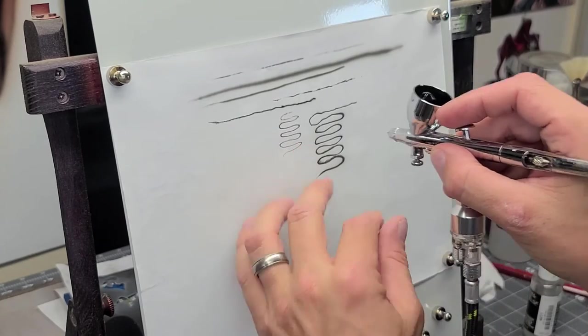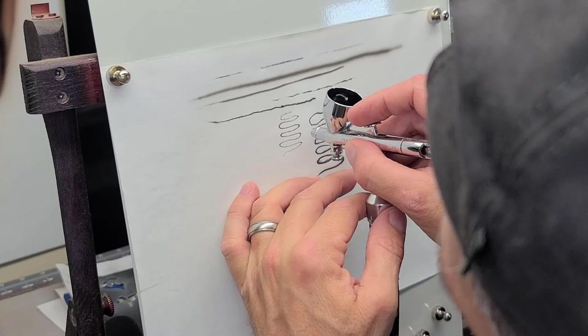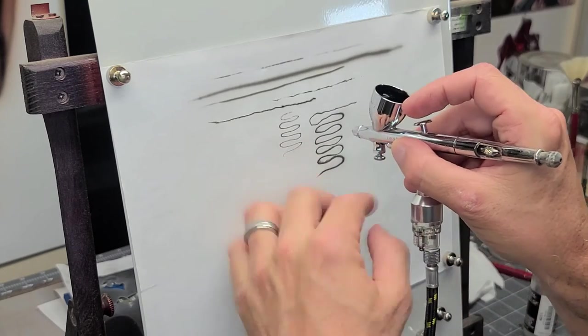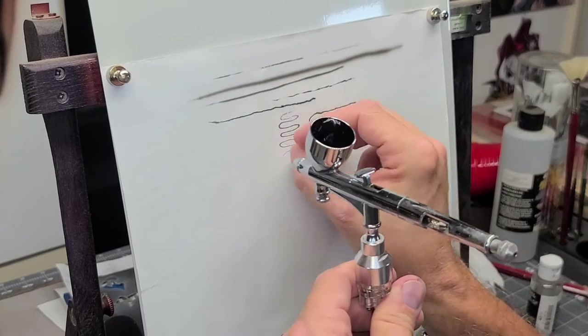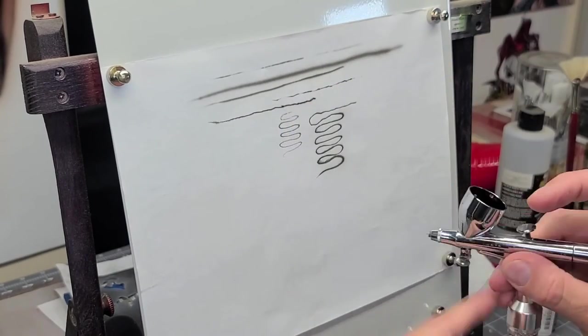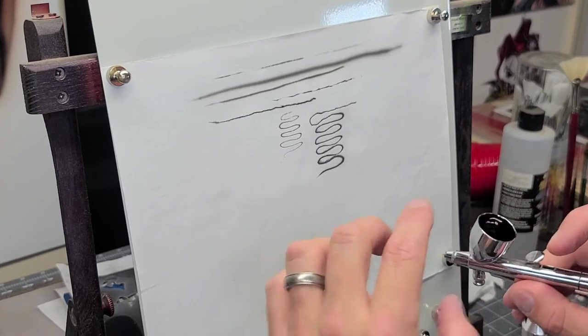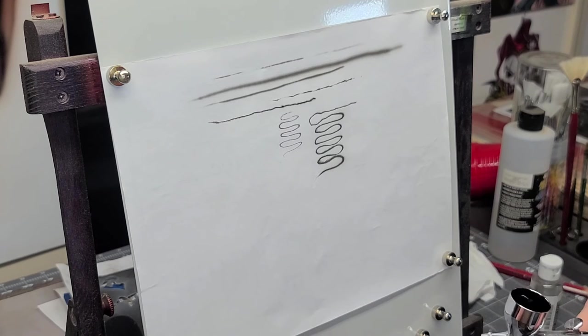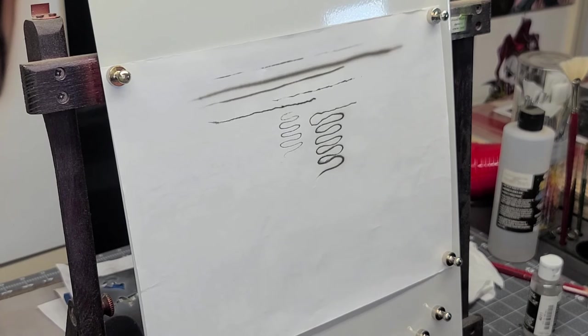So the lower the PSI that you can get that paint to come out. Now keep in mind, you're going to have to thin that paint out pretty good if you're going to be spraying it less than 10 or 15 PSI. So it's probably not going to be straight out of the bottle. That's for sure.